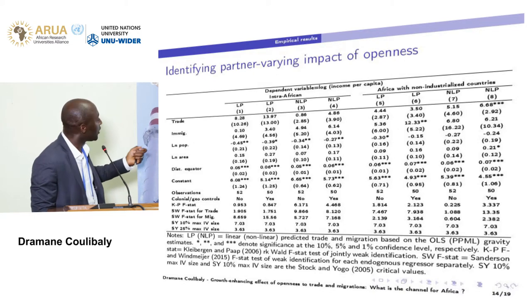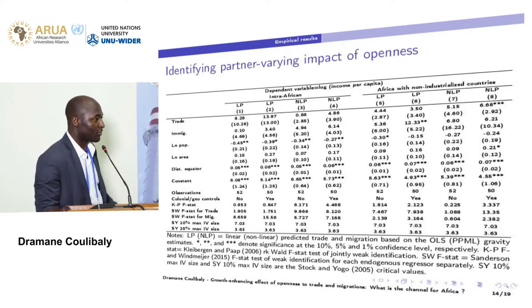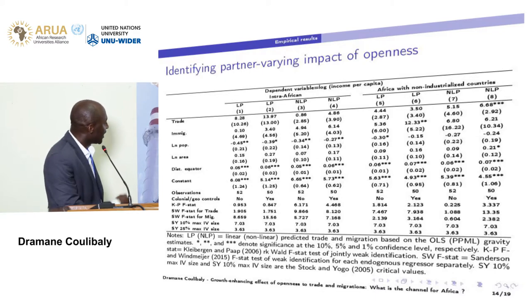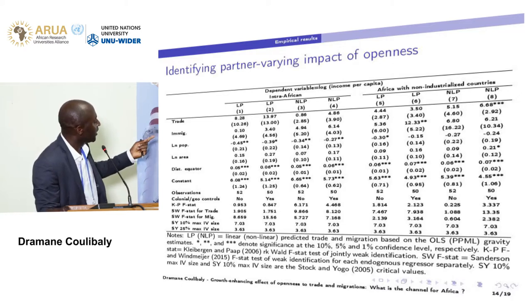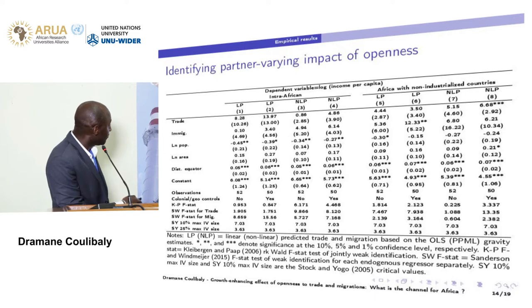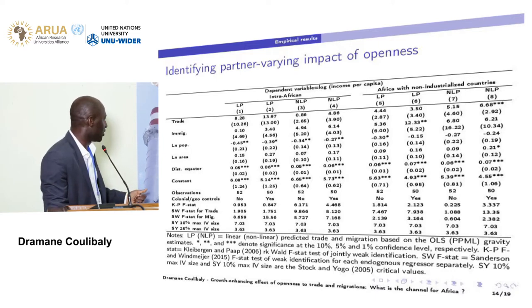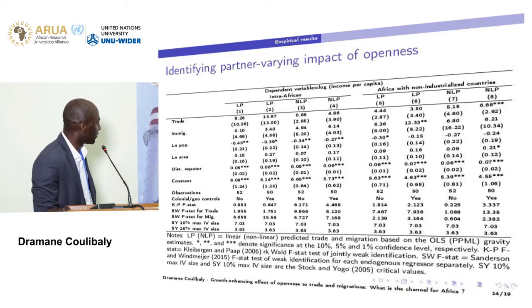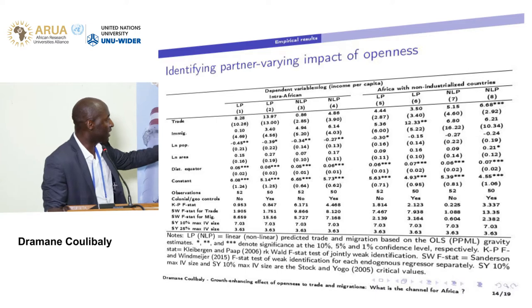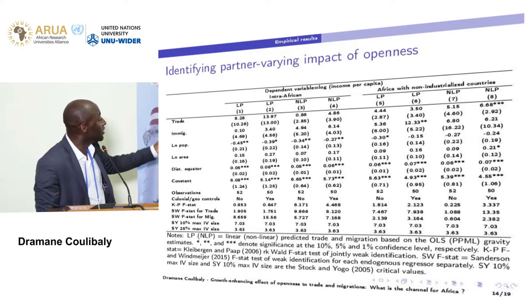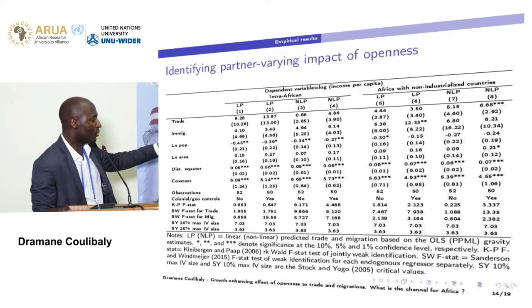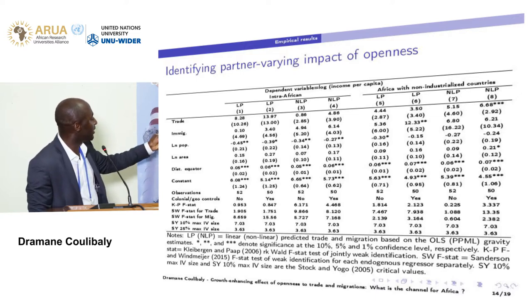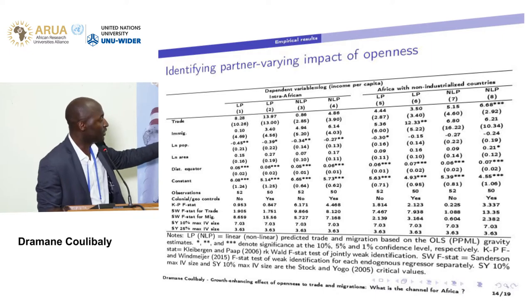Now we look at the impact depending on the subset of partners. In the first four columns, we investigate the impact of African openness with other African countries: trade is not significant and migration is not significant in any case. We then examine African openness with non-industrial countries: only with an extensive set of controls is migration positive when using the linear instrument, while trade is positive with the non-linear instrument.